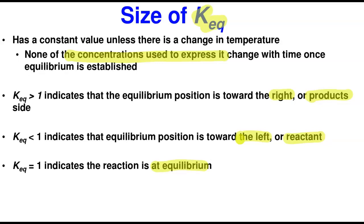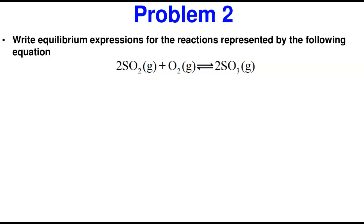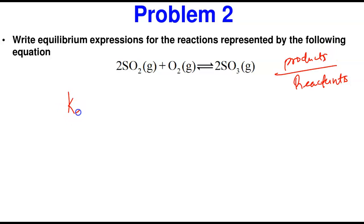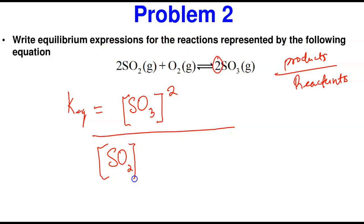Problem 2: write the equilibrium expression for the reaction presented by the following equation. Again, it is the products divided by the reactants. We have one product, SO₃, with a coefficient of two, so we write [SO₃]² divided by [SO₂]² times [O₂]¹ — the coefficient of O₂ is one, so you don't have to write it if you prefer. This is the equilibrium expression for this reaction.